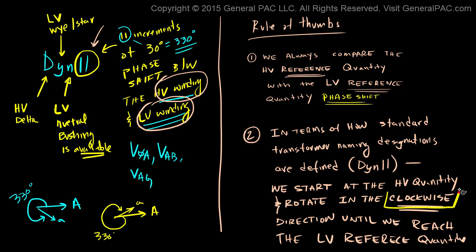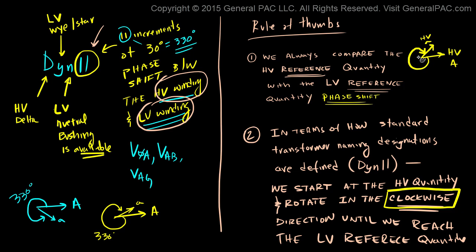This is a key point: we rotate in the clockwise direction until we reach the low voltage reference quantity. So once we have this high voltage reference quantity for winding A, we rotate clockwise until we get to the low voltage reference quantity for winding A on the secondary side. This is 330 degrees, as in our example — so in this type of designation, we're rotating in the clockwise direction.